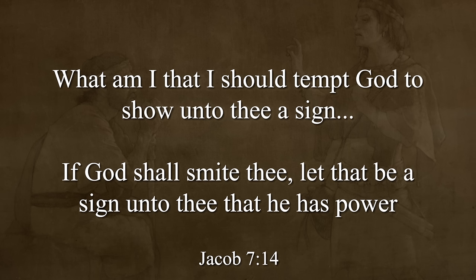Whether Sherem is actually bringing a lawsuit, we don't know, because it doesn't get to that point, but he's certainly raising aggressive arguments. Jacob answers those arguments. In verse 9, he says, 'Denyest thou the Christ who shall come?' He pushes back, asking if Sherem believes the scriptures, and argues that Sherem doesn't understand them. Then Sherem says, 'If you think this is right, show me a sign by the power of the Holy Ghost.' Jacob resists: 'Don't tempt God.' However, he says, 'If God will smite thee, let that be a sign unto thee.'